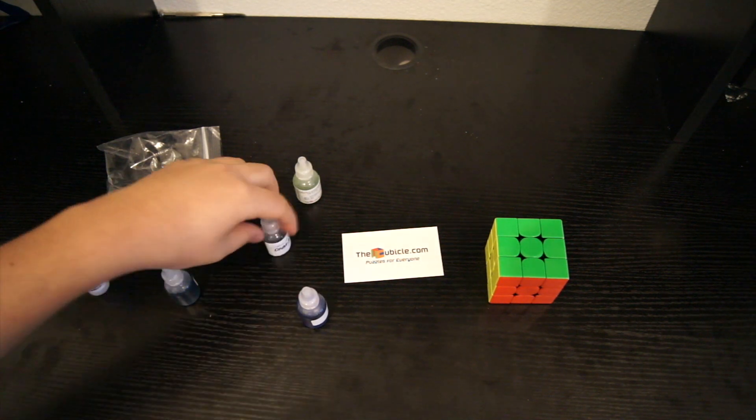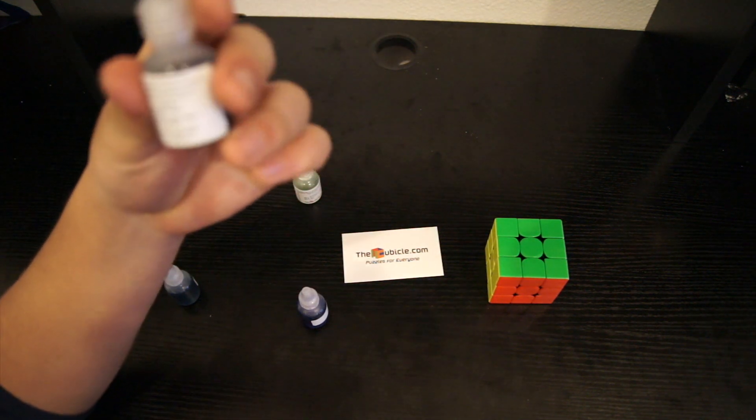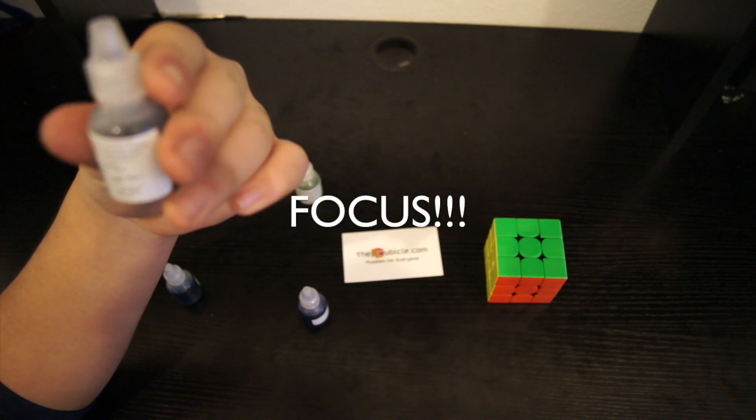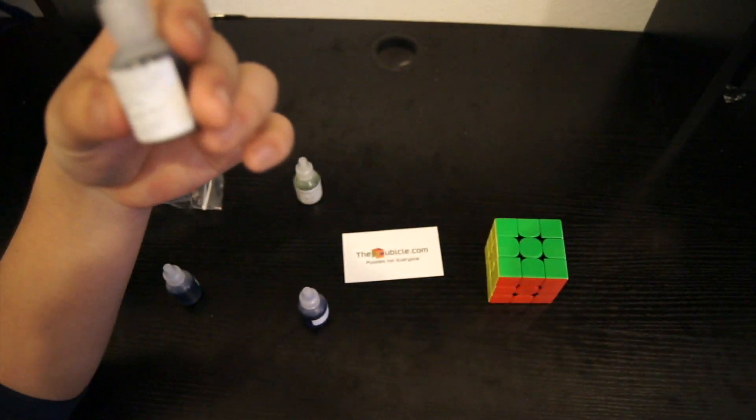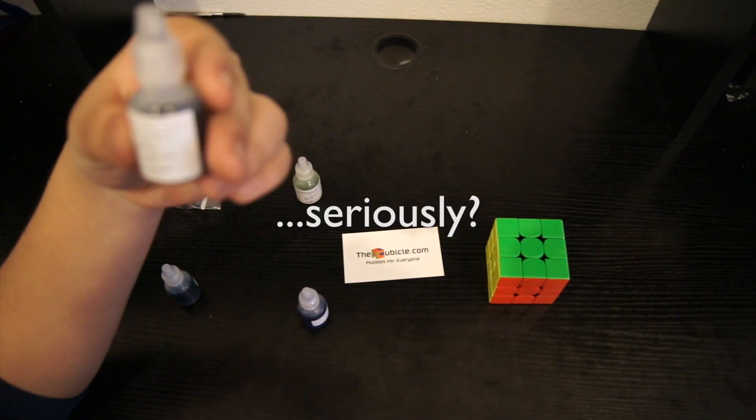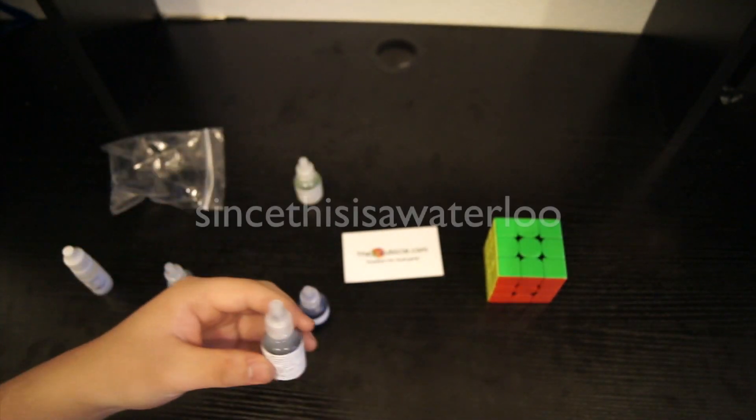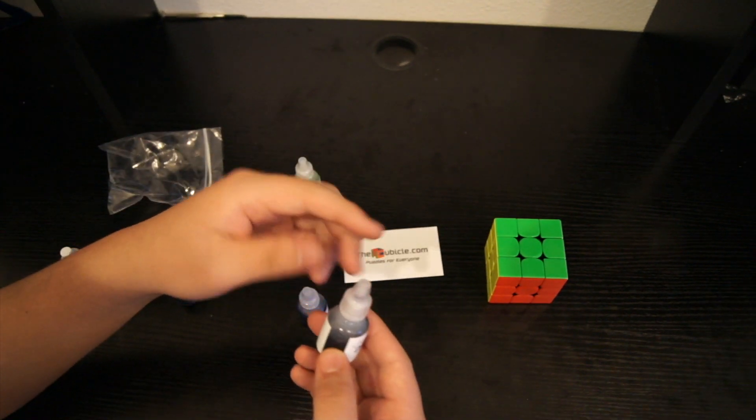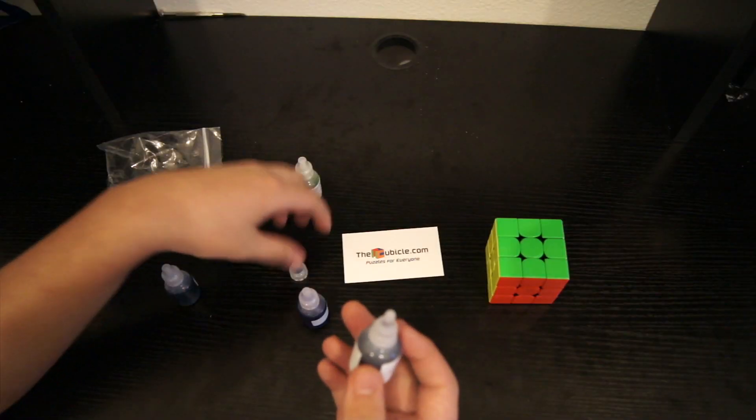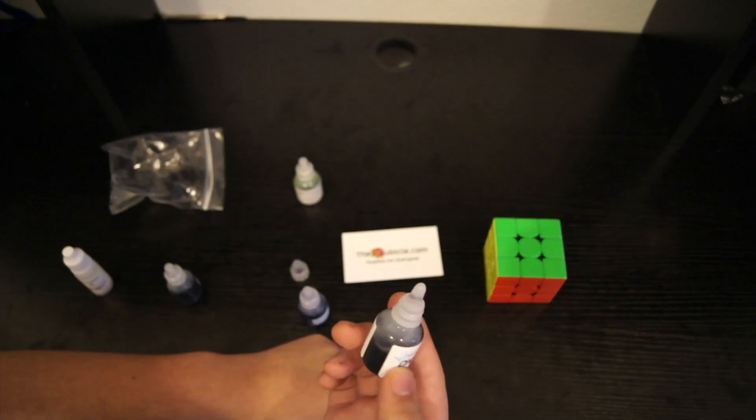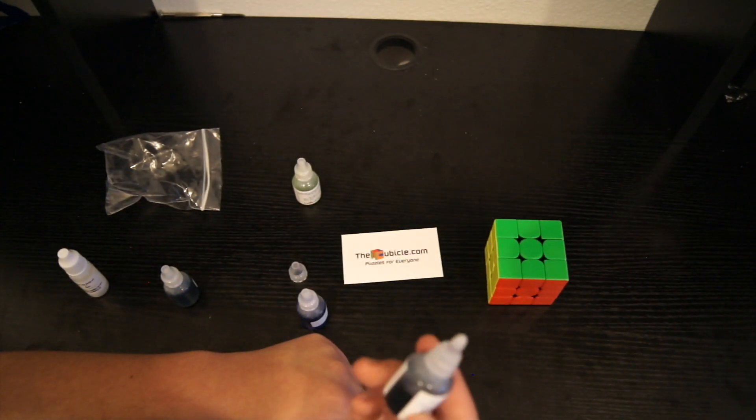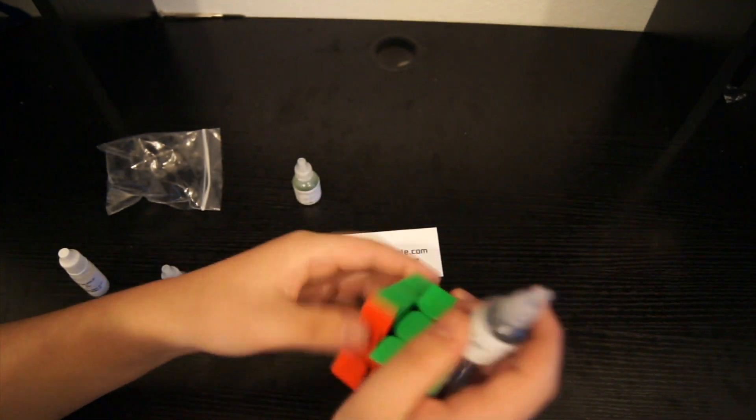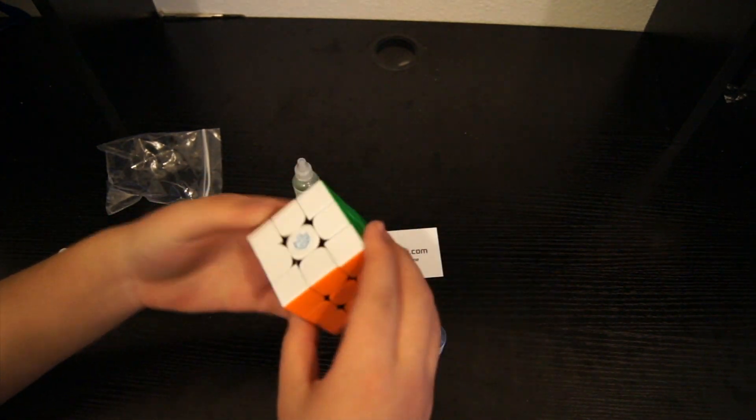Alright, let's start with the DNM37. So it says that it's a water-based piece engineered by cubicle labs to create a refreshing and lasting burst of speed for your puzzles. Now since this is a water-based lube, it'll work almost immediately. And also, the way it's engineered, it will last longer than most water-based lubes. So let's put it in my GAN356X.